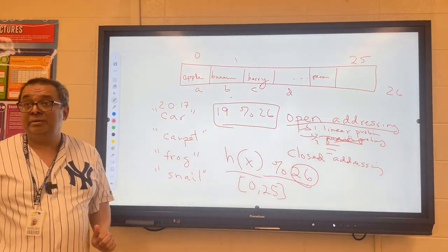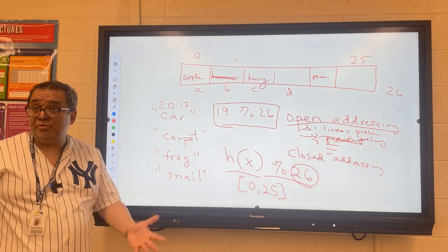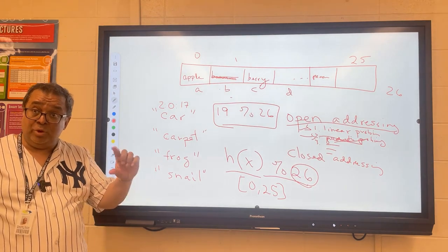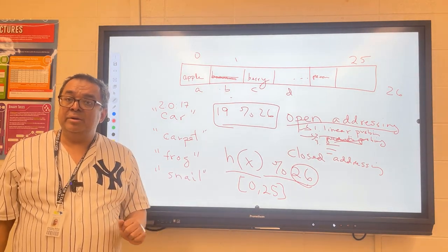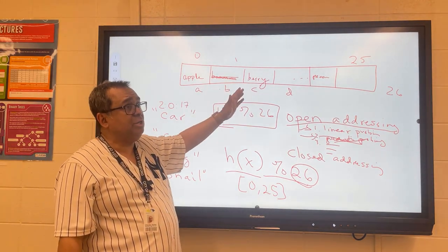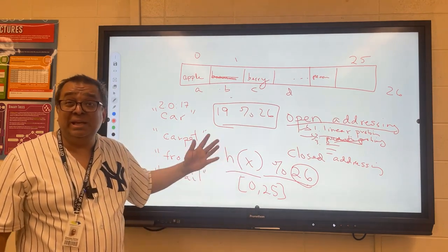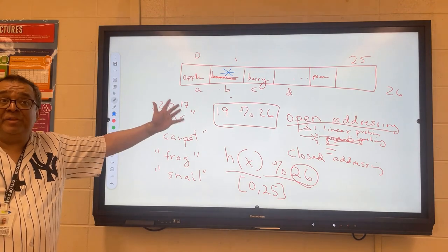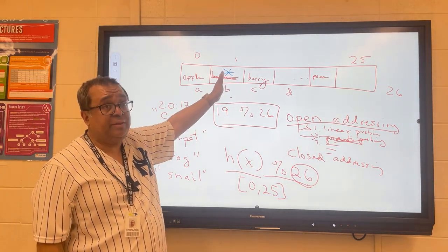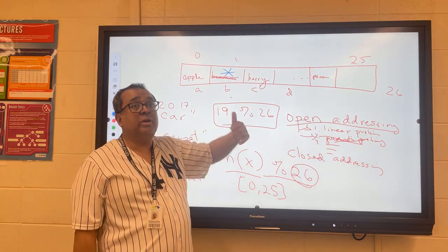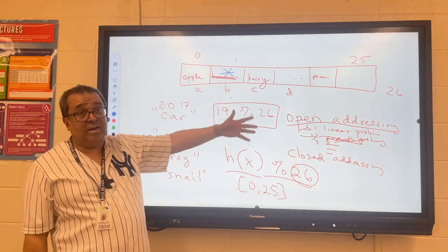Now imagine that later on you decide to delete banana. Okay, so you've deleted banana. So you delete it like that, so now there's a hole here, right? Later on you search for berry. So you search for berry, you put it through the hash function. Slot 1 is empty. What would you erroneously conclude? That you don't have berry. You see the problem here? So when we have this weird situation where we're using linear probing and we're having to park our assets one over, when we delete, we have to put a marker here to say that something used to be there. That way, when we're looking for stuff, if we happen to come across one of these markers, what should we do? We keep going and looking. When do we stop looking and conclude we don't have it? When we reach an empty space that has no marker. Can you see how this could get annoying and complicated?